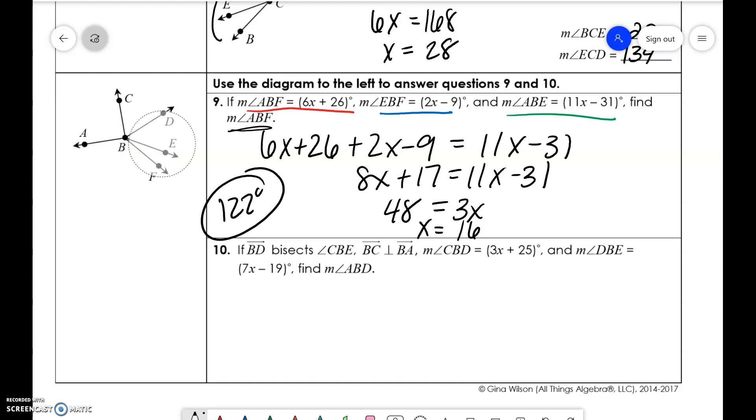Then I'm going to just erase these colors because we're moving to the next one. So BD bisects angle CBE. Okay. So that means that an angle was cut in half. When you see bisects, that means something was cut in half. So that means CBD is the same measure as DBE.